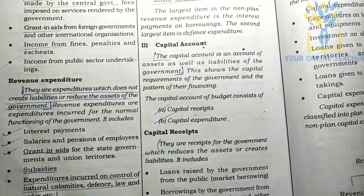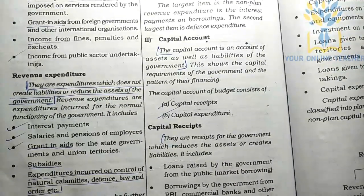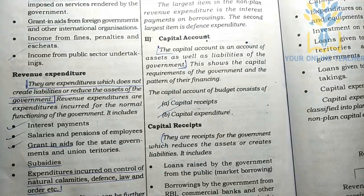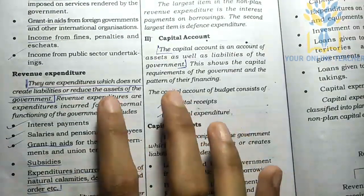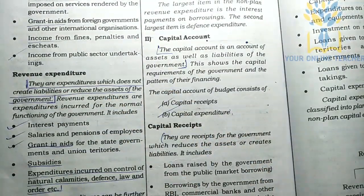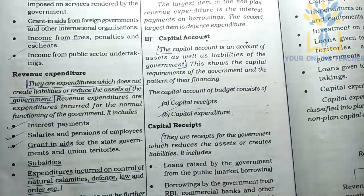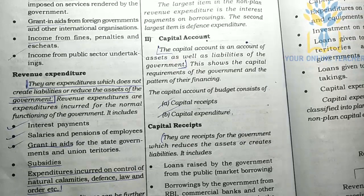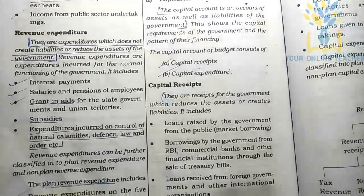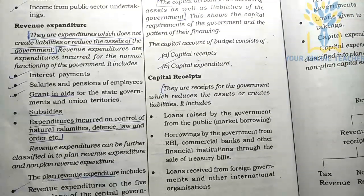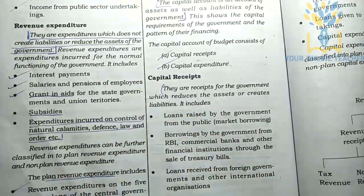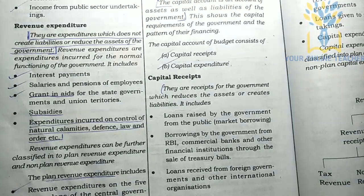Revenue expenditure refers to government spending that does not create assets or reduce liabilities. It covers the normal functioning of the government. Examples include interest payments on loans, salaries of government employees, and grants to states.